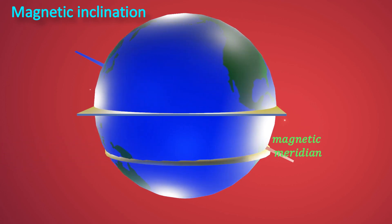The angle subtended between the horizontal magnetic field and the magnetic meridian is known as magnetic inclination at that point. It is indicated by I.